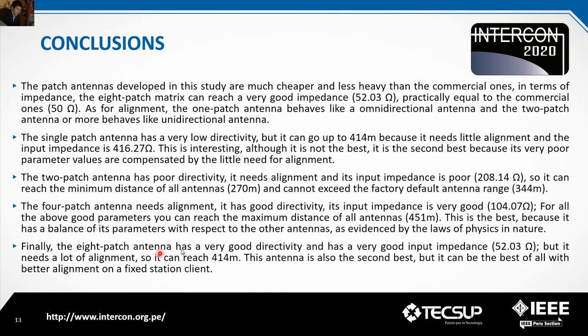Finally, the 8-patch antenna has very good directivity and a very good input impedance of 52 ohms, but it requires a lot of alignment, so it can reach 414 meters. This antenna is the second best overall, but it could be the best of all with better alignment on a fixed station client.